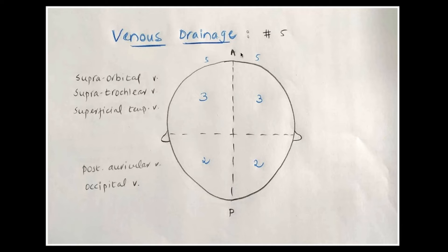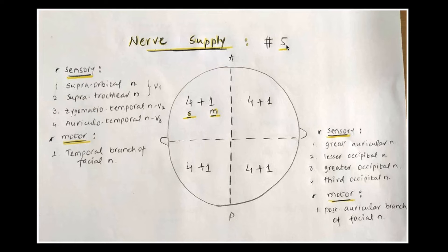Similar to arterial supply, the venous drainage also follows the rule of five. Similarly named veins — supraorbital, supratrochlear, superficial temporal, posterior auricular, and occipital veins — carry blood from each half, with three in front and two behind the ear, so five veins on each half.